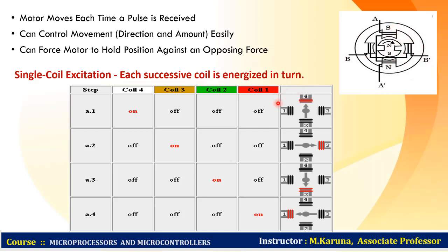The center tap allows a change of current direction in each of two coils when a winding is grounded, thereby resulting in a polarity change of the stator. Stator poles dictate the direction of rotation. The current sent through the wire coils determines the stator poles. As the direction of current is changed, the polarity is also changed, causing reverse motion of the rotor.